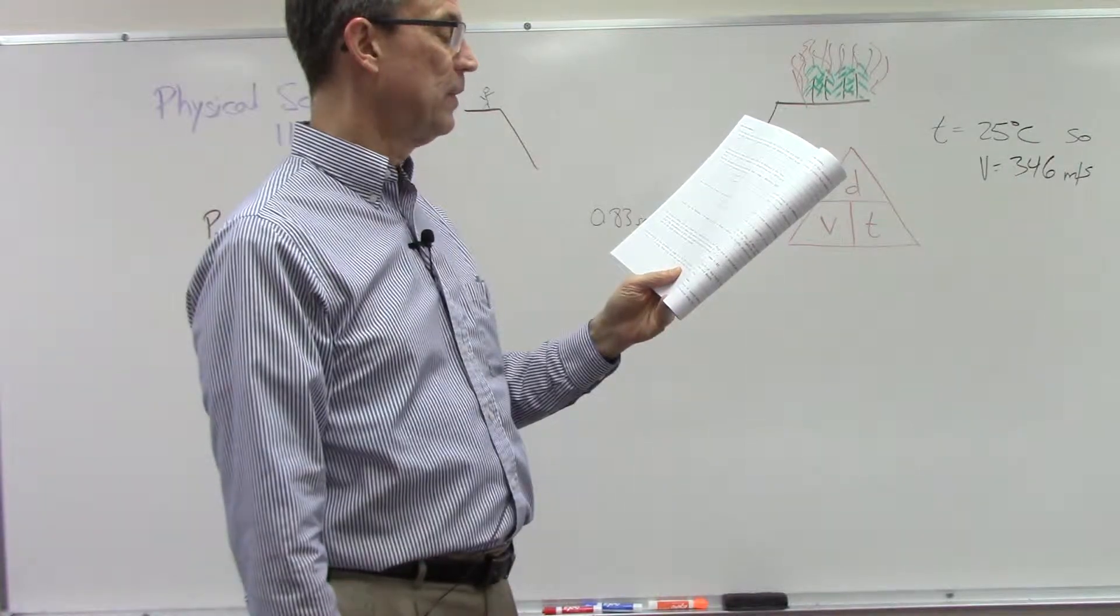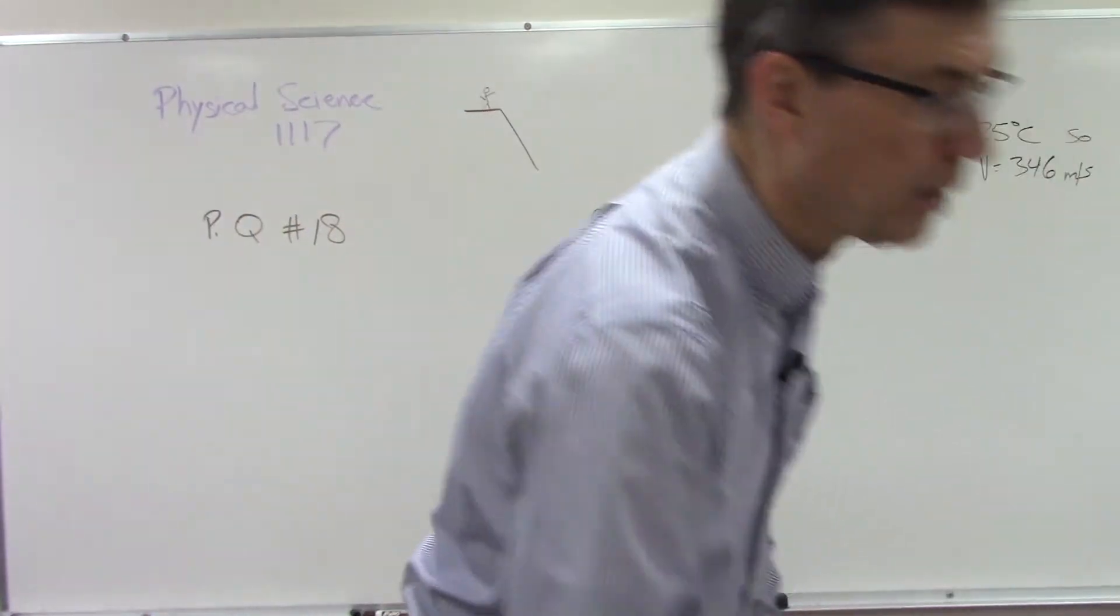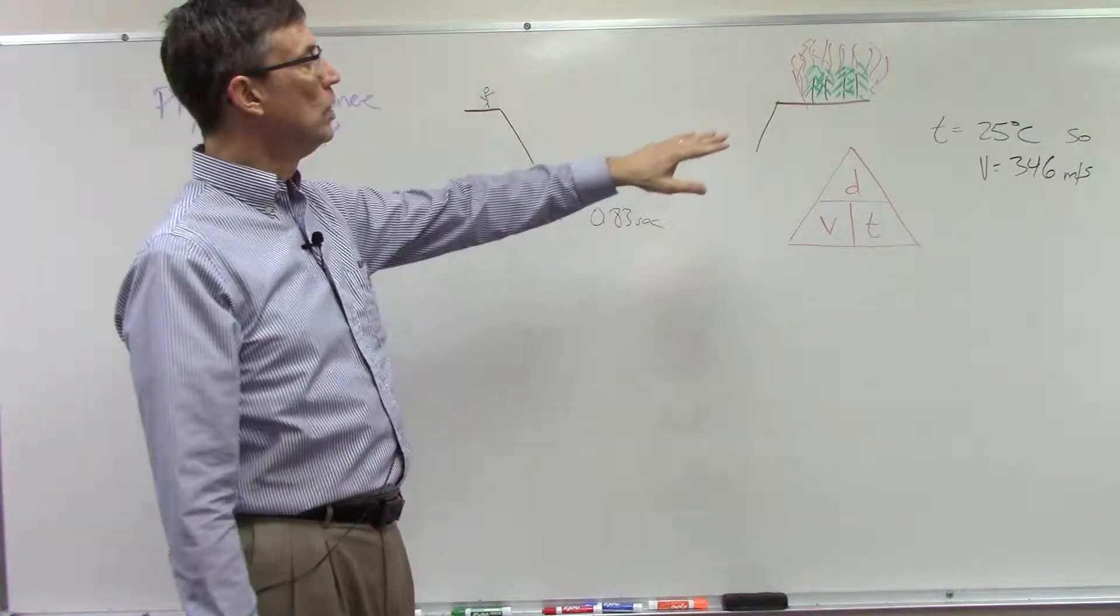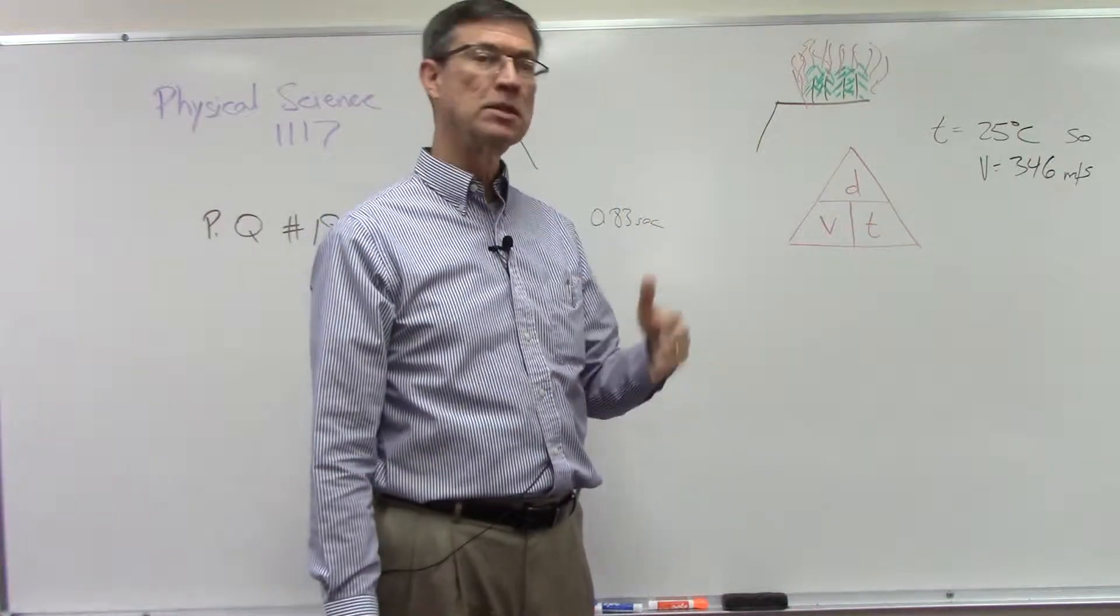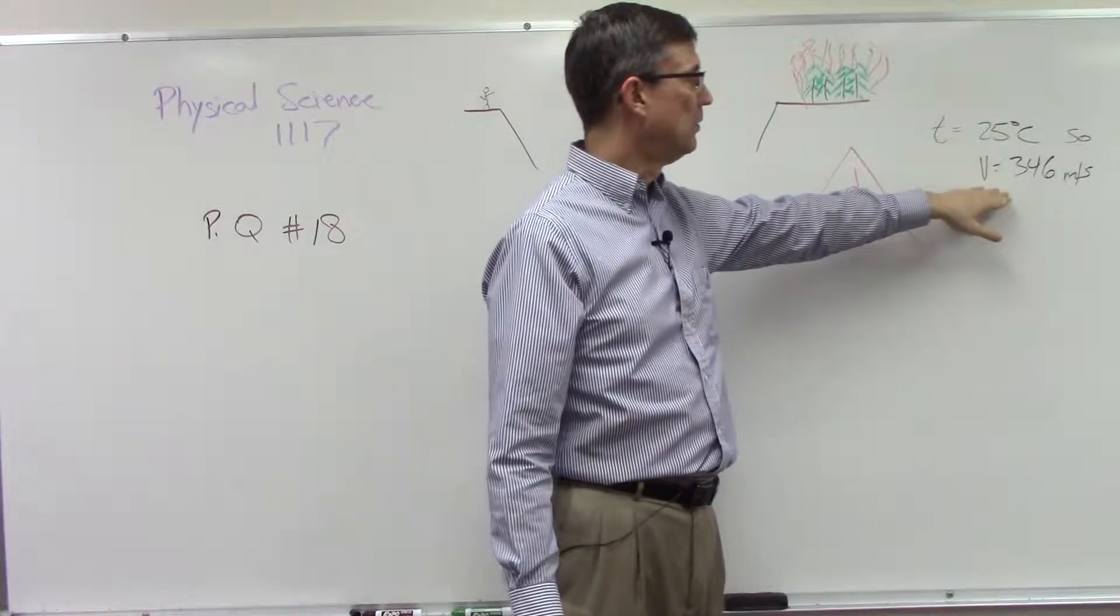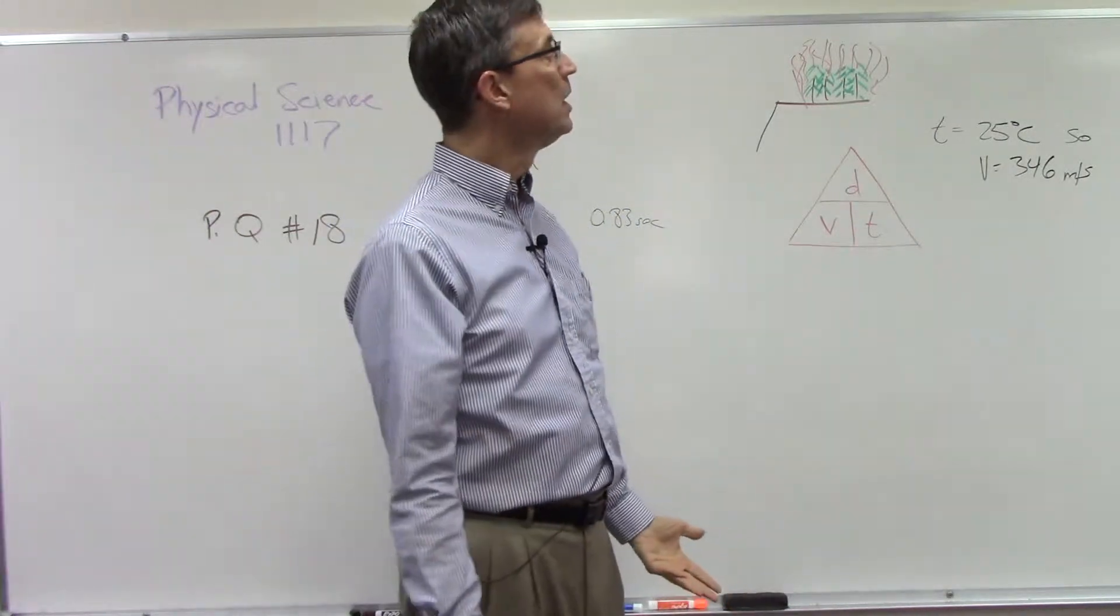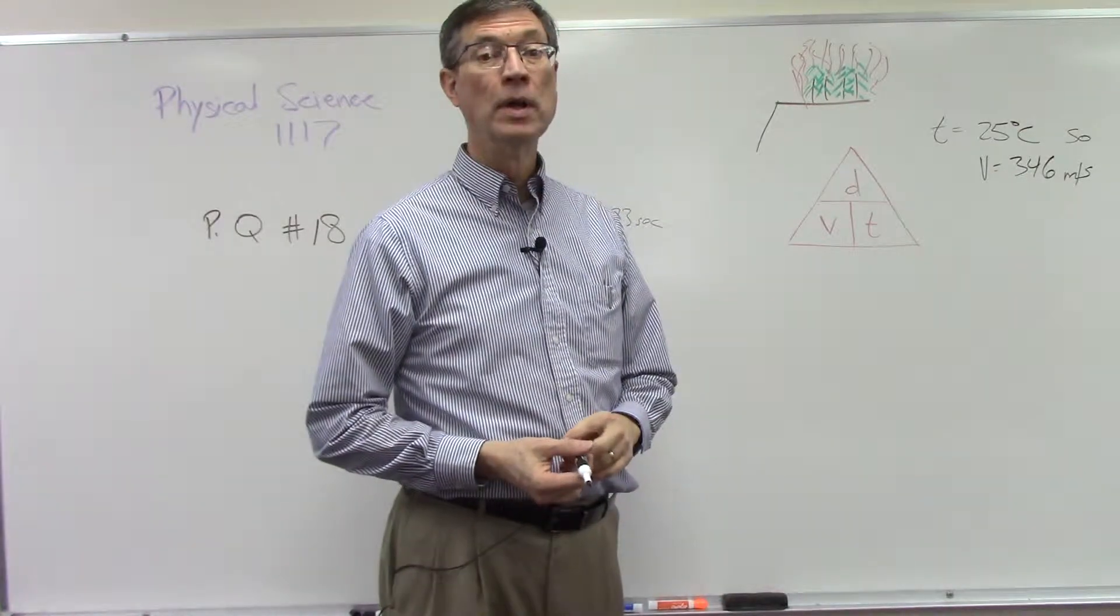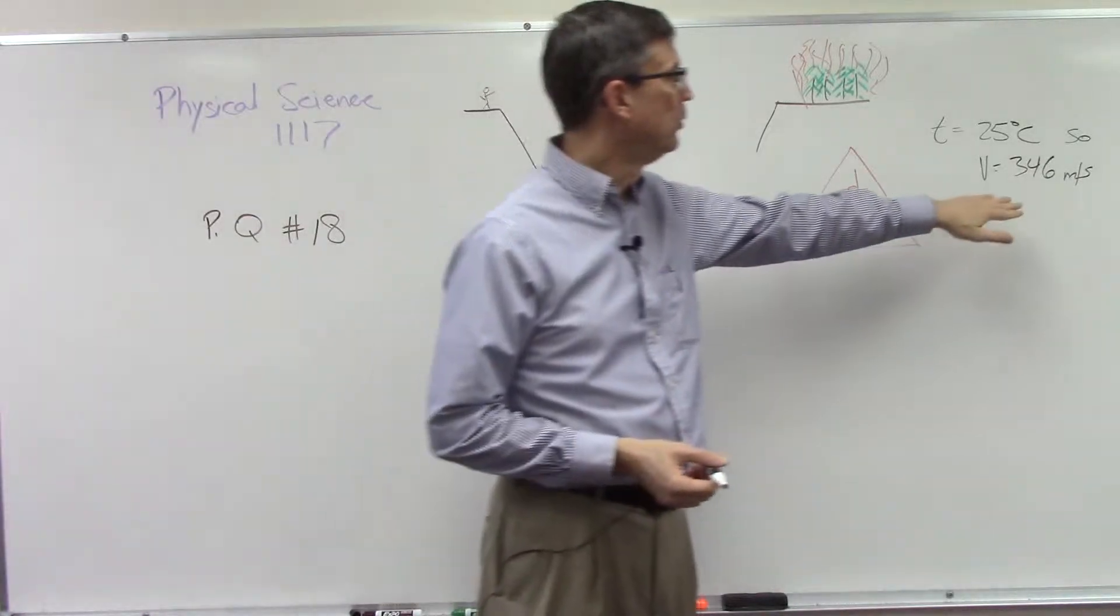How far away is the fire? The temperature is 25 degrees. Don't forget to finish the problem. The first answer you get is the total distance the echo traveled. We know that it's 25 degrees, and actually the pace already tells us that at 25 degrees the velocity is 346. But if you needed to solve, you could use 331 plus 0.6 times the temperature to get 346.